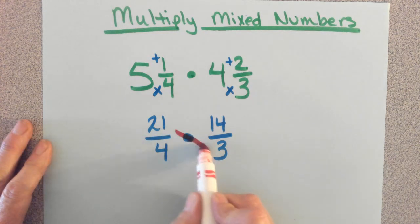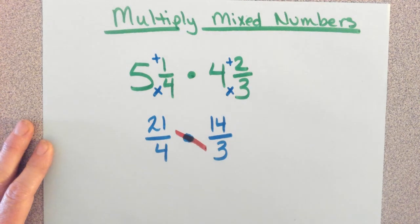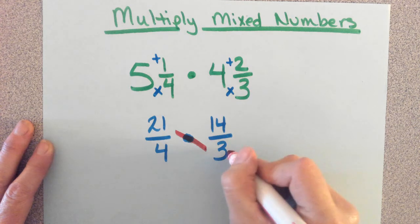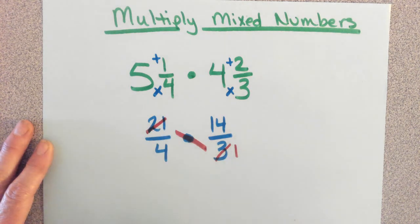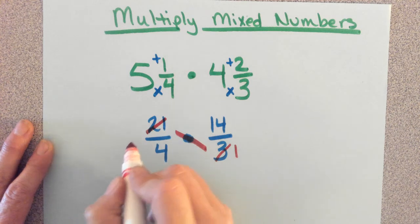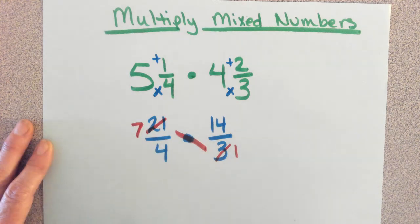So look at the twenty-one and the three. Class, what can those be divided by? Three. Three, good. All right, three divided by three is one, and twenty-one divided by three is seven.